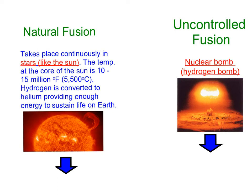On Earth, we have actually done fusion before — we have never done it controlled, but we have done uncontrolled fusion. The hydrogen bomb, developed as a successor to the atomic bomb, is based on fusion instead of fission. It was also much more devastating, and luckily it has never been used in any kind of conflict.